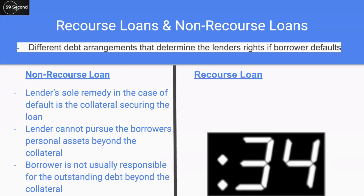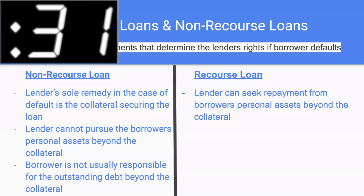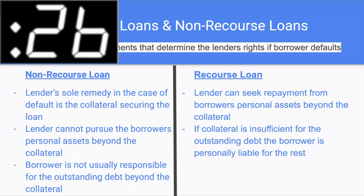However, in a recourse loan, the lender can seek repayment from the borrower's personal assets beyond the collateral. If the collateral is insufficient for the outstanding debt, the borrower is personally liable for the rest.